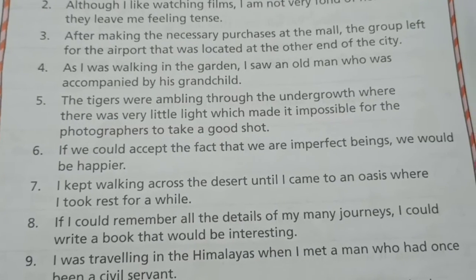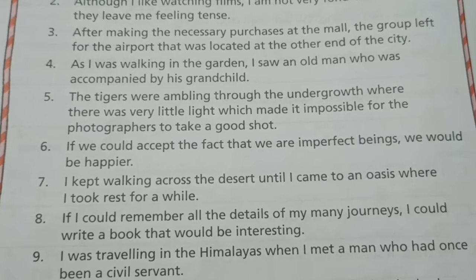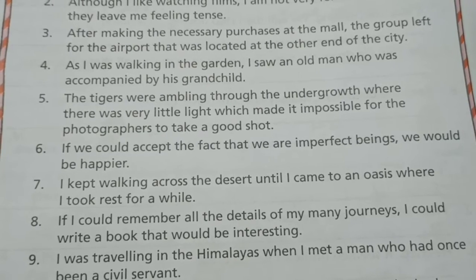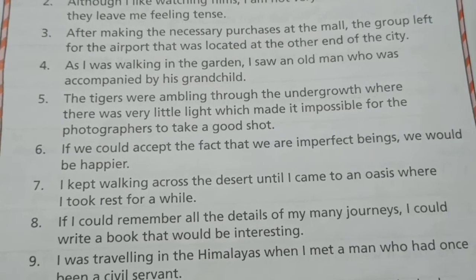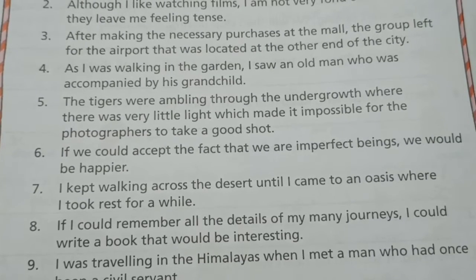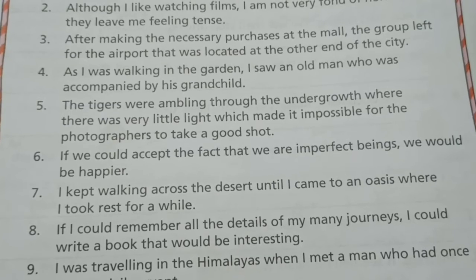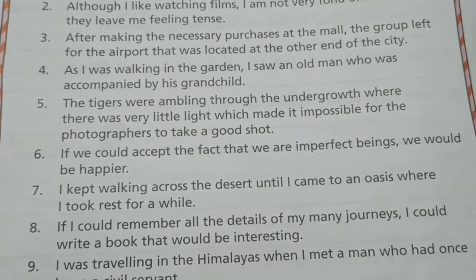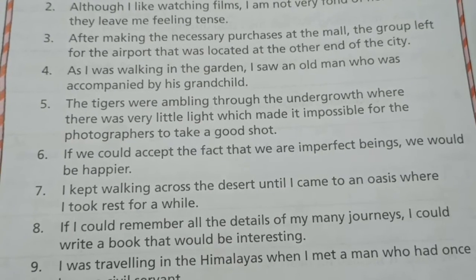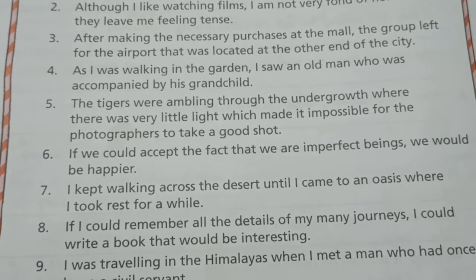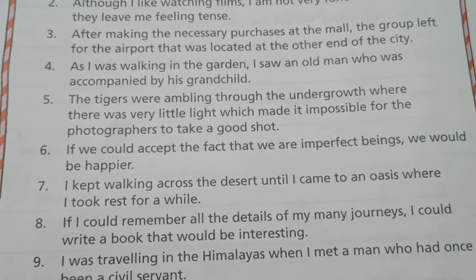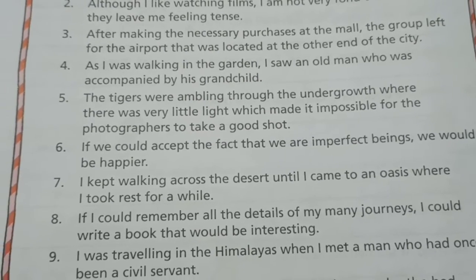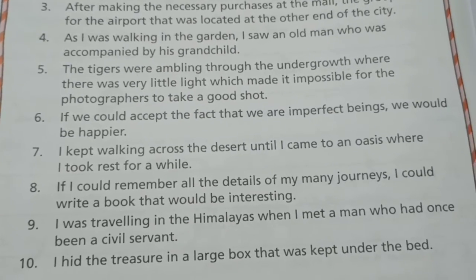Fifth: The tigers were ambling through the undergrowth. 'where there was very little light' is the first adjective clause qualifying 'undergrowth'; 'which made it impossible for the photographers to take a good shot' is another adjective clause qualifying 'light'.